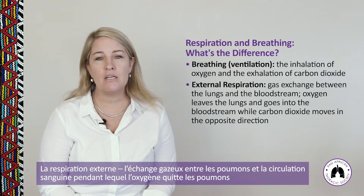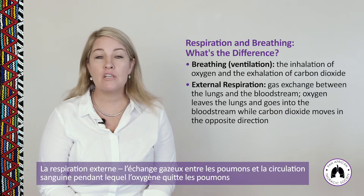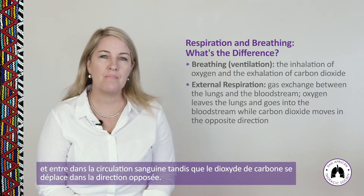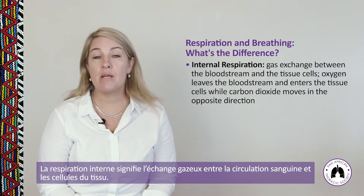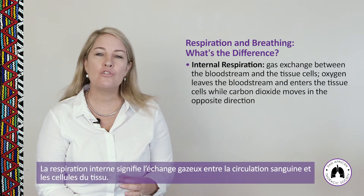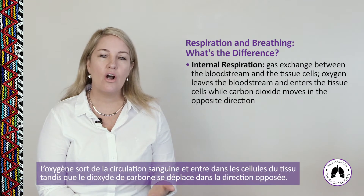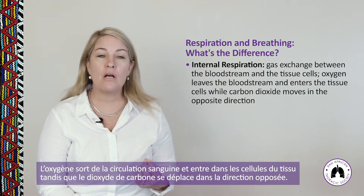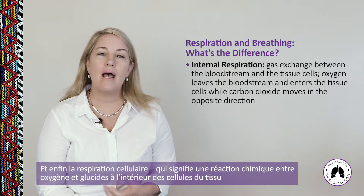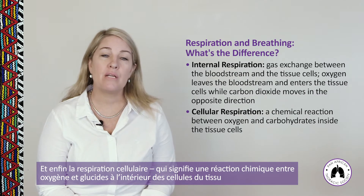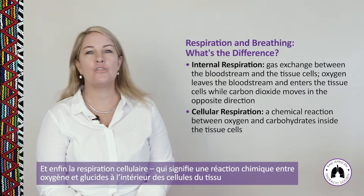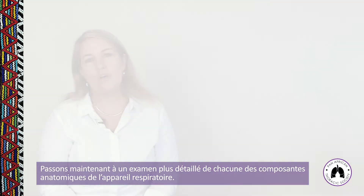External respiration is gas exchange between the lungs and the bloodstream, whereby oxygen leaves the lungs and goes into the bloodstream while carbon dioxide moves in the opposite direction. Internal respiration is gas exchange between the bloodstream and the tissue cells — oxygen leaves the bloodstream and enters the tissue cells while carbon dioxide moves in the opposite direction. Lastly, cellular respiration is the chemical reaction between oxygen and carbohydrates inside the tissues of the cells.